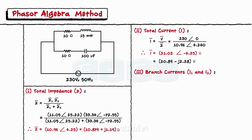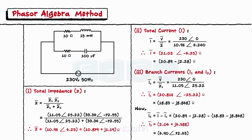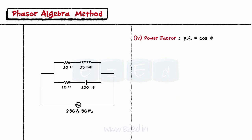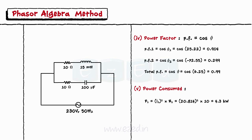The branch currents are calculated as the ratio of the total voltage supplied to the respective impedance of the branch. Thus we get I1 equal to 18.33 minus 8.868j amperes. The current I2 becomes the algebraic subtraction of I and I1, giving I2 equals 2.06 plus 6.588j amperes. The power factor for branch 1 is 0.904 and for branch 2 is 0.299. The total power factor becomes 0.99. The power consumed by each branch is P equals I squared times R, giving P1 equals 4.3 kilowatts and P2 equals 476 watts.